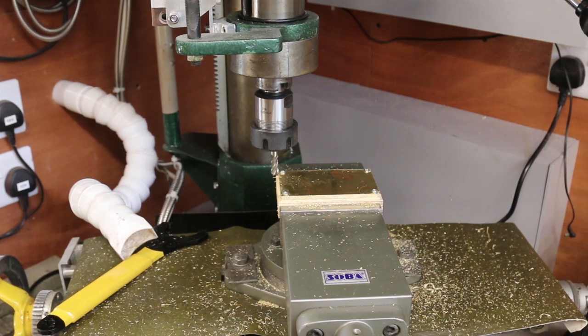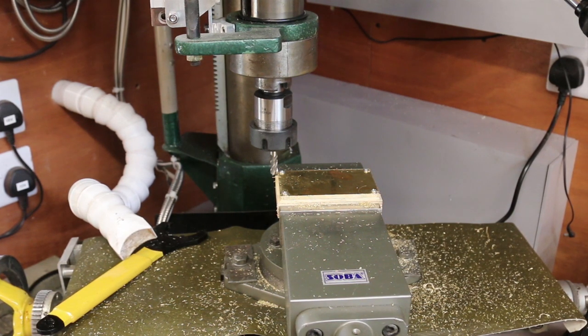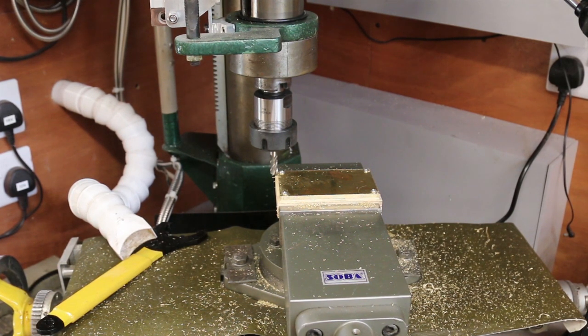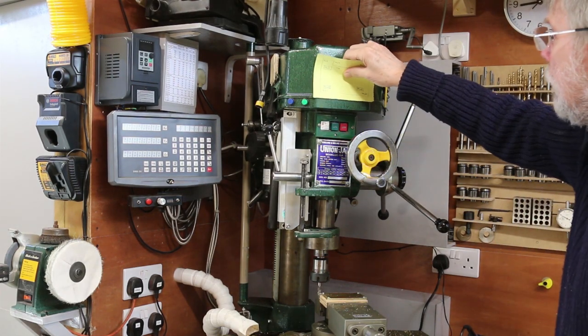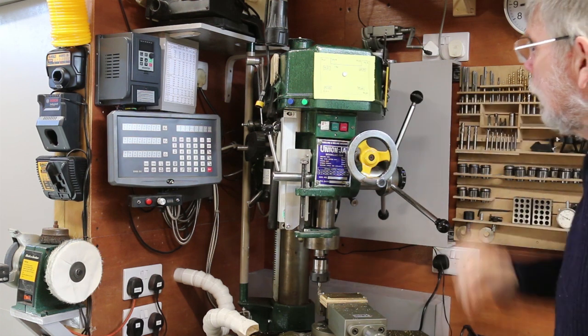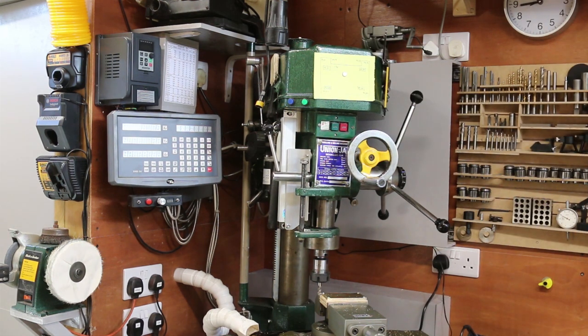With the outside cut to size and the references made it's now time to hollow out the center. To do this I make a DRO map and stick it to the front of the machine. It's very easy to make mistakes when you're doing this and having a map makes it a lot easier.